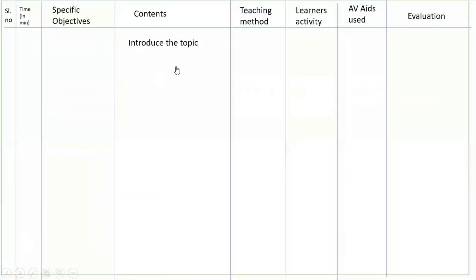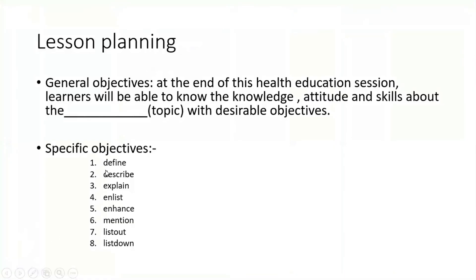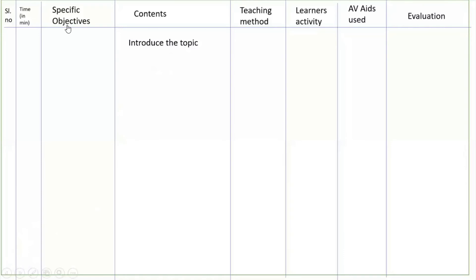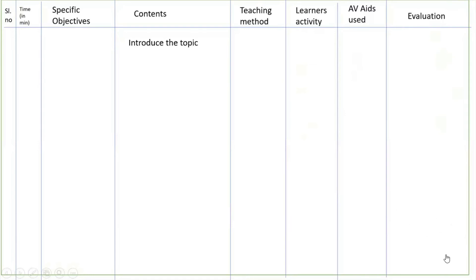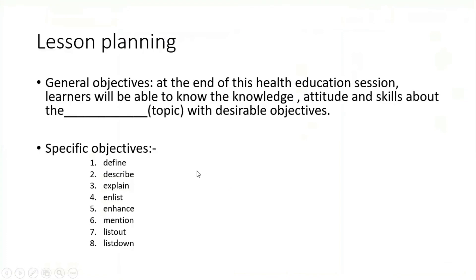After the introduction, you start adding the specific objectives. For example: 'Define personal hygiene' — take five minutes or two minutes. Write the content: what is personal hygiene — definition. Teaching method: lecturing or discussion. Learner activity: they are listening or discussing. AV aids: flip chart or flash card. Evaluation: 'Define personal hygiene?' — write the evaluation question for each specific objective.